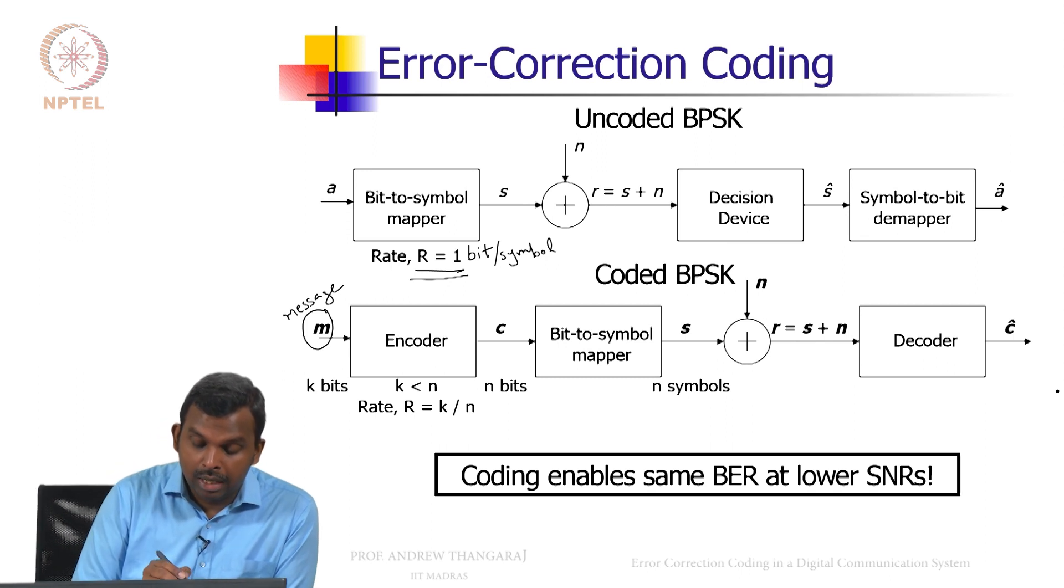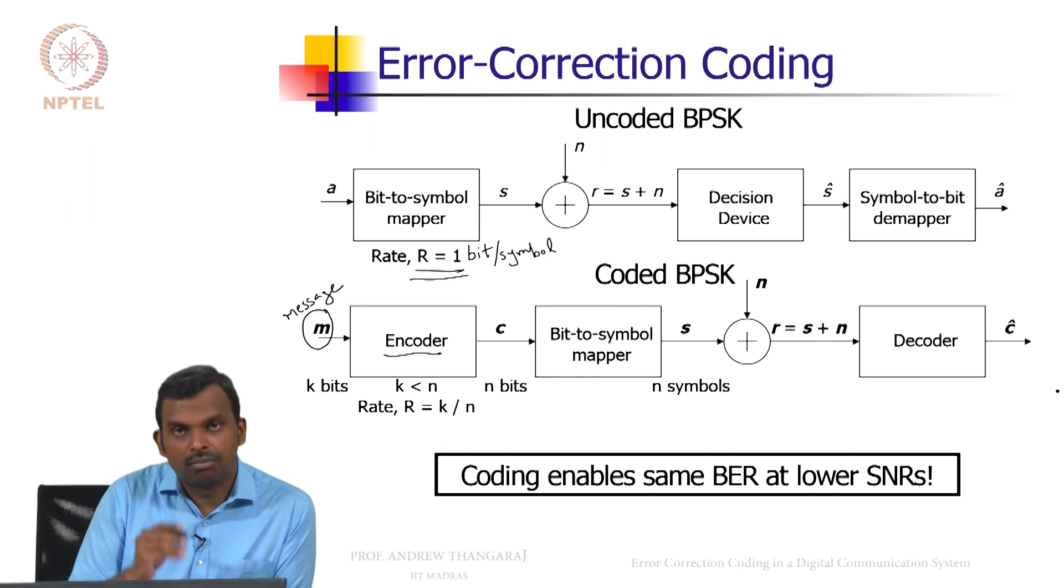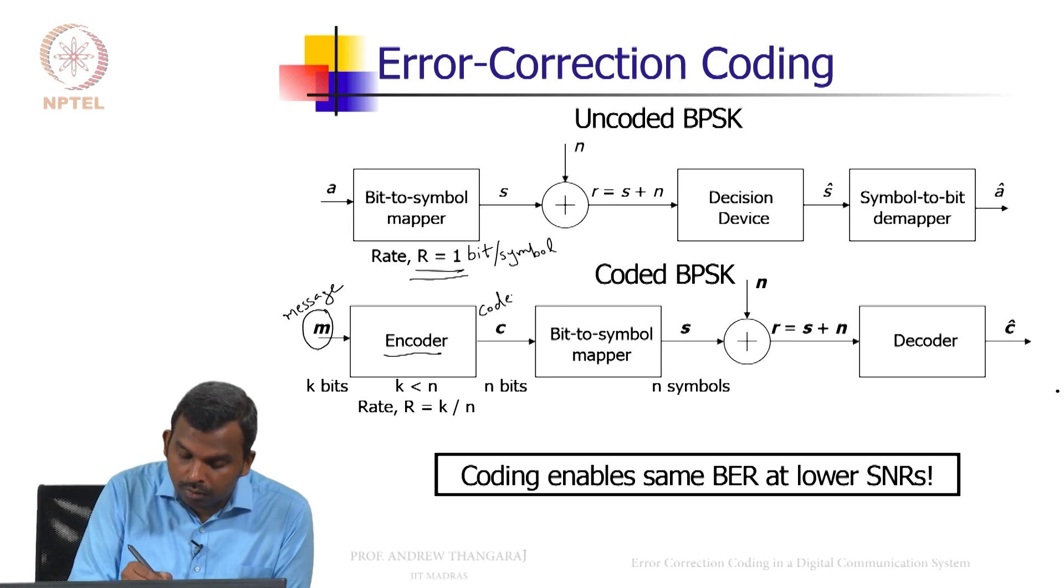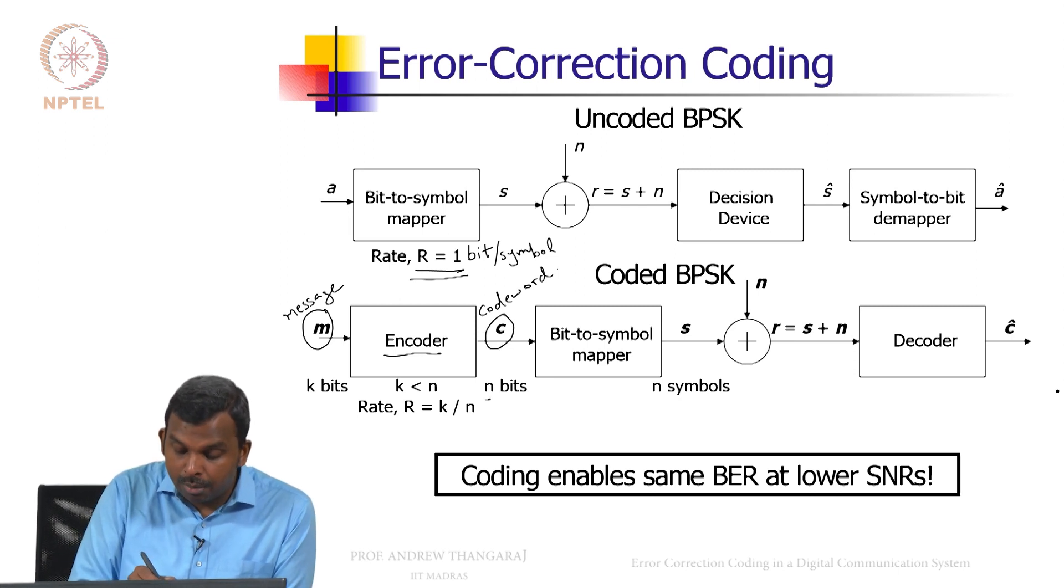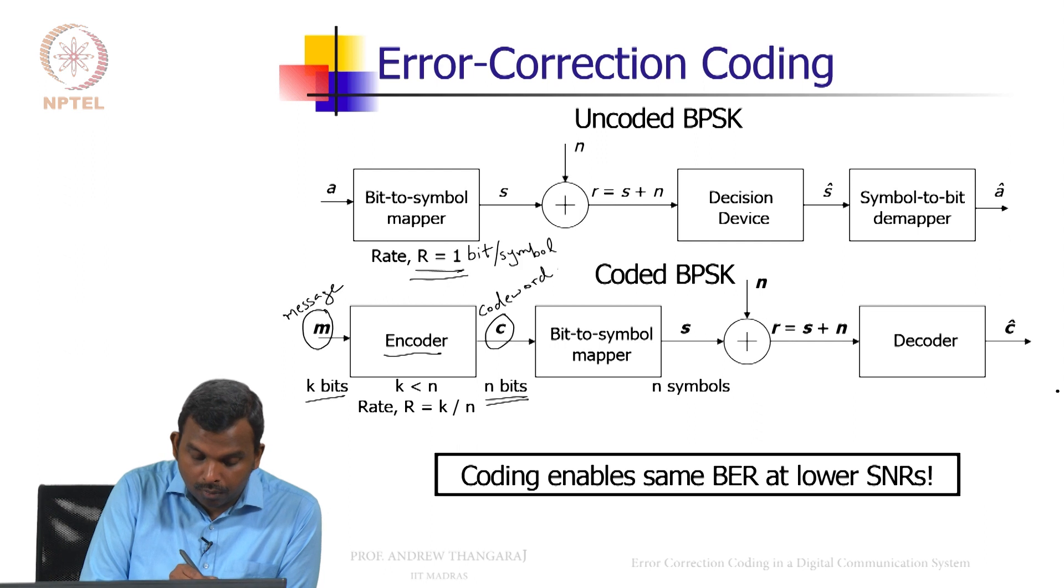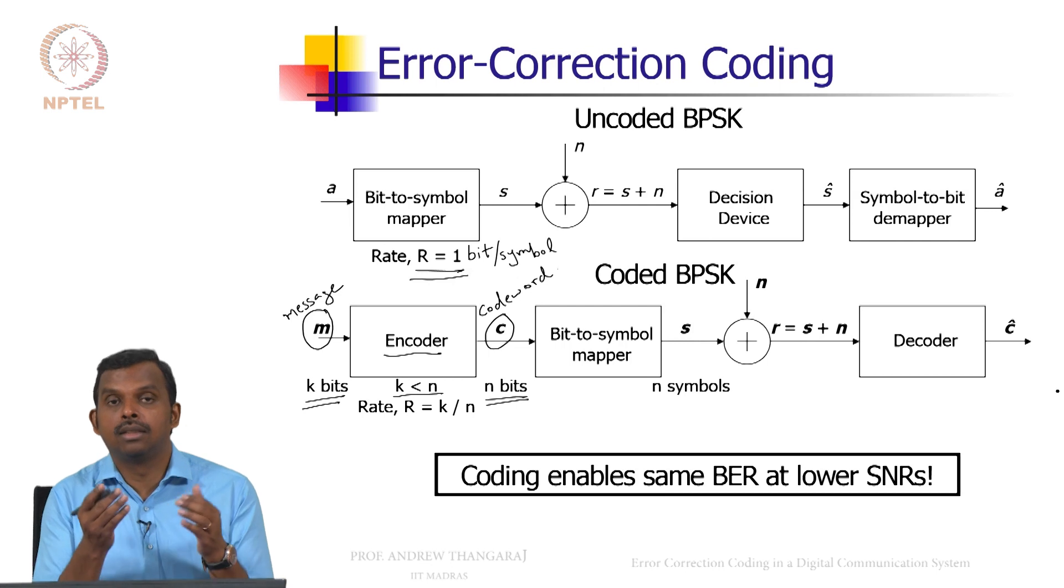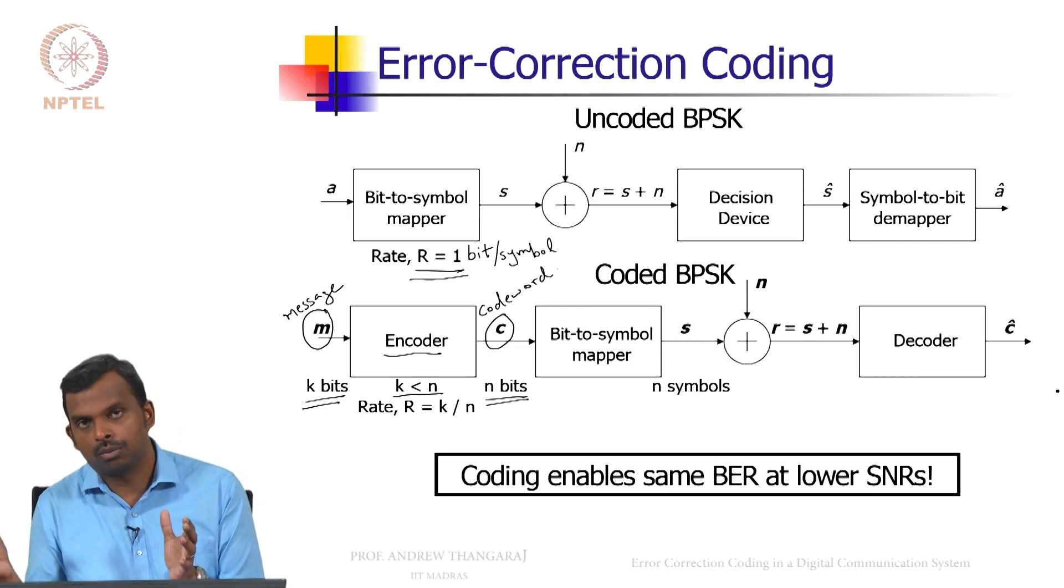Now you will take this message M and you will encode it using some encoder into a codeword C. And this codeword will be N bits in length and this N will be greater than k. So you will take say 100 bits and produce a 200 bit codeword.